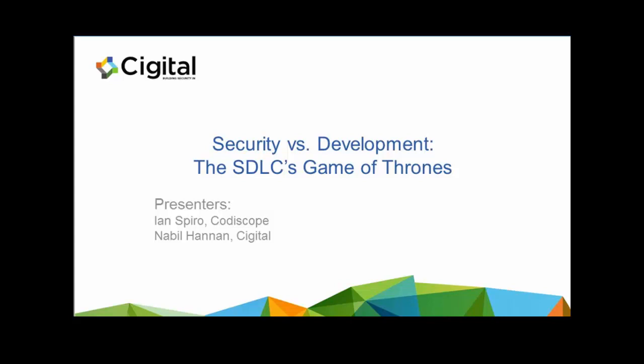Representing the development house is Ian Spiro. Ian is Codiscope's Director of Security Strategy and Research. Prior to joining Codiscope, Ian spent the better part of eight years at ALS Labs and IBM developing solutions for security teams.